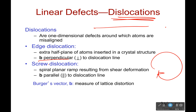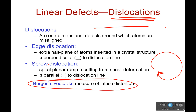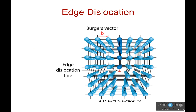Now, this is going to make sense as we go to the next page. The big thing right here is that the Burgers vector is a measure of the lattice distortion - it tells you how much it's been distorted. Now let's look at this, because just talking about them doesn't make any sense. We're going to talk about the edge dislocation this time. Next time, screw dislocation. Here's the Burgers vector, but that doesn't tell you anything until I show you where it comes from.